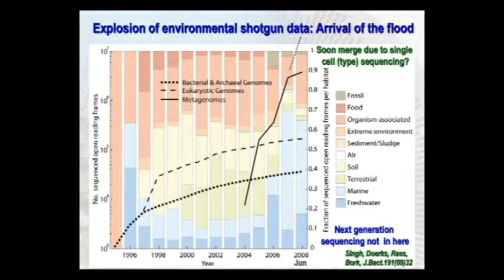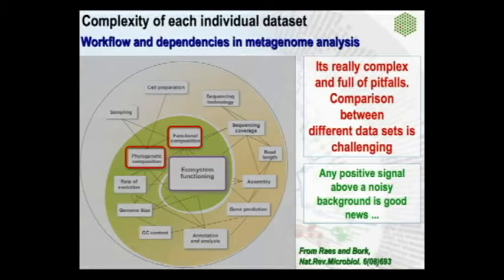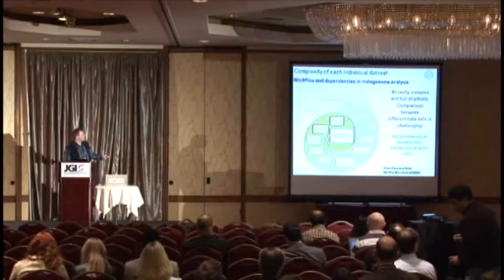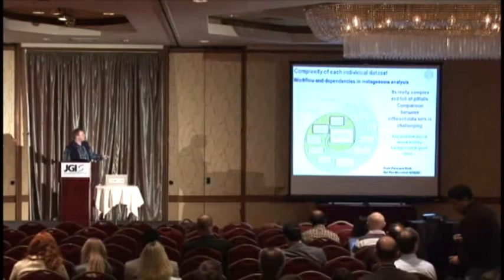It covers all kinds of different ecosystems. As a bioinformatician, whenever you want to compare two datasets, there's always the problem of apples and oranges. Despite methods becoming much better and standards arising, in environmental sequencing you start with sampling and go through all kinds of bioinformatics procedures. At the end, you want to arrive at some kind of phylogenetic composition and functional composition, to say something about your ecosystem. That's the goal.